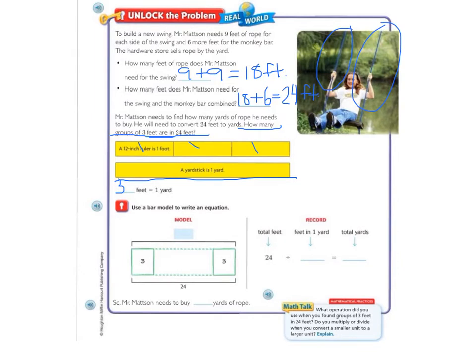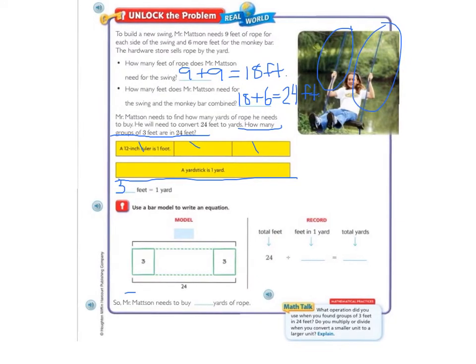So since we know we need 24 feet, and every 3 feet equals 1 yard, we're going to use a bar model to find the total number of yards that Mr. Mattson needs. So if we look down at our bar model at the bottom of the page, we see that we need a total of 24 feet, which is down here. And we need to find out how many groups of 3 that 24 can be divided into. So if we do 24 divided by 3, we get 8. So let's look over at the record, and we'll write our equation. Our total feet was 24 feet in 1 yard, 3. So our total yards was 8. So Mr. Mattson needs to buy 8 yards of rope.